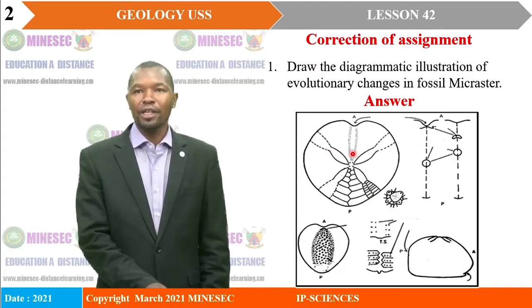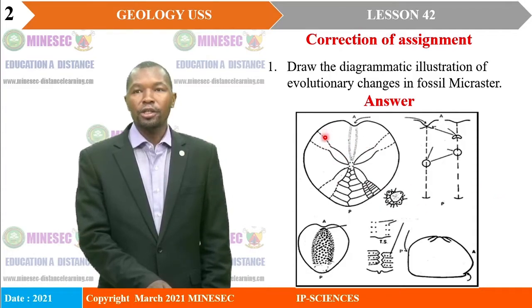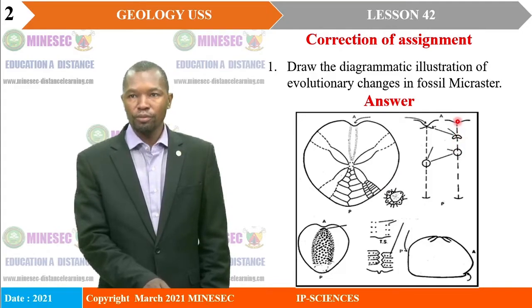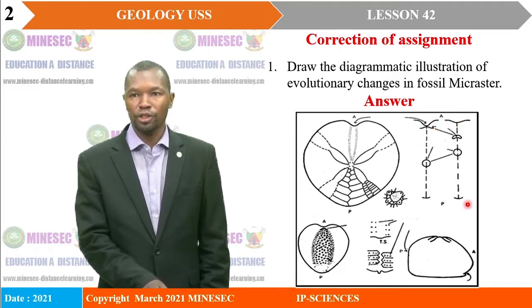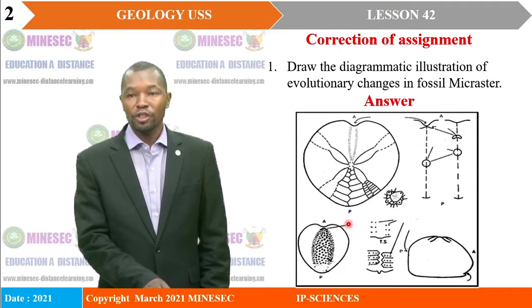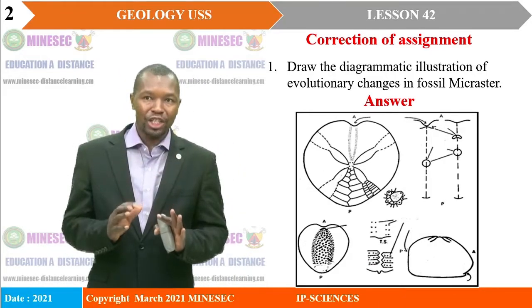In our answer, emphasis was placed on the drawing position. This is the evolved form of fossil microcosystems with the heart shape. This is the old form, or the ancient form. This is the recent form structure. This is the position of the annals, and that is the plastron.